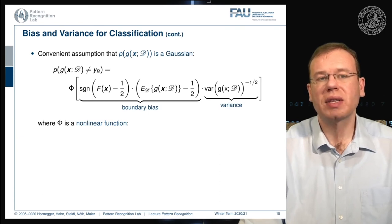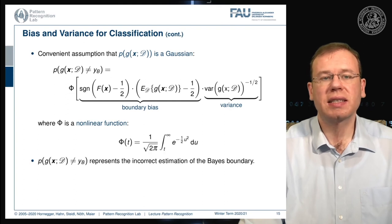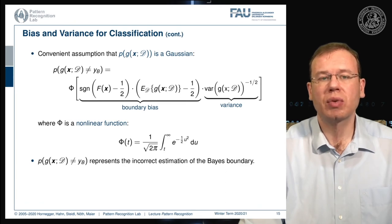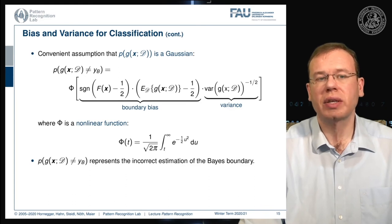The non-linear function phi is given as one over the square root of 2π, times the integral from t to infinity of e to the power of minus one-half u squared, integrated over u.